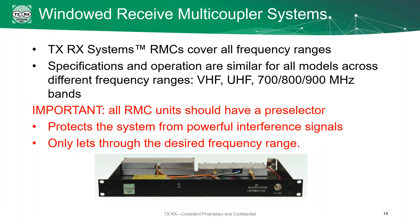RMCs cover all frequency ranges — VHF, UHF, 700, 800, and 900 MHz. It's important that these systems have a pre-selector, which is that bandpass filter in front of the system. The TTA system has this as part of the tower top box, but the receive multi-coupler does not. This filter helps in two ways: first it protects your system from powerful interference signals, and second it only lets through the desired frequency range. Not using a bandpass filter in front of the multi-coupler could actually cause damage both to the multi-coupler and to your radios if somebody else has a particularly powerful signal.